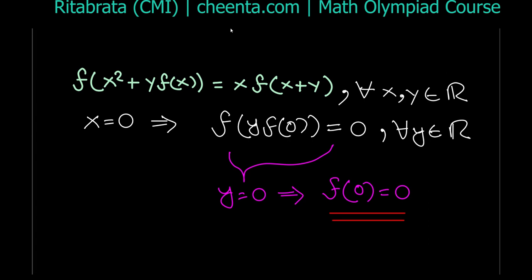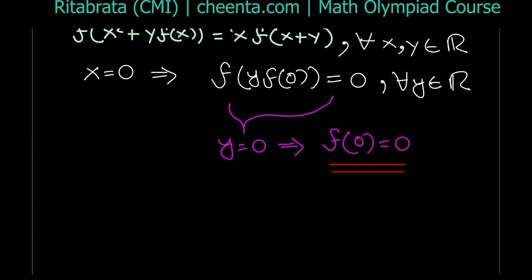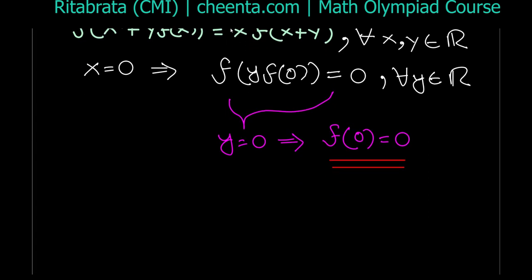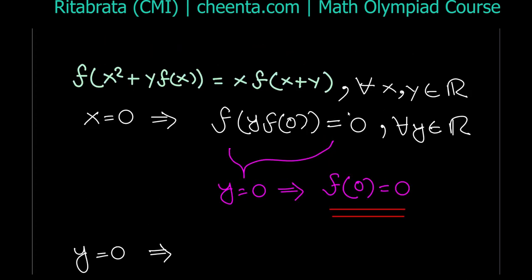Now that we have f(0) = 0, we can substitute more values. Let's substitute y = 0. What do we get? We have f(x²) = x·f(x).